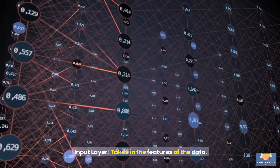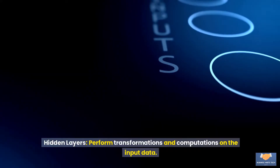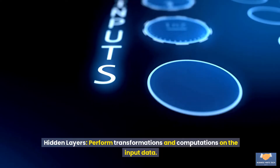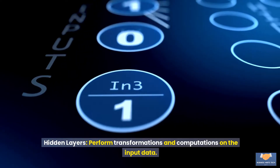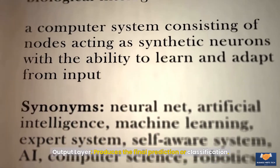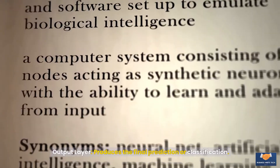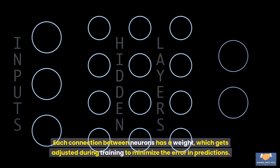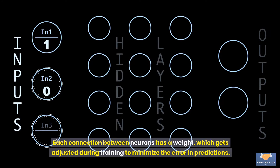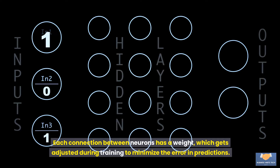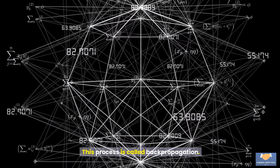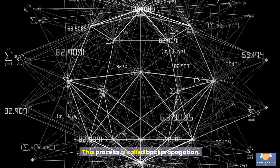The input layer takes in the features of the data. Hidden layers perform transformations and computations on the input data. The output layer produces the final prediction or classification. Each connection between neurons has a weight, which gets adjusted during training to minimize the error in predictions. This process is called backpropagation.